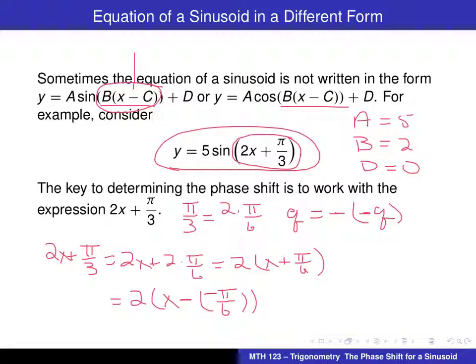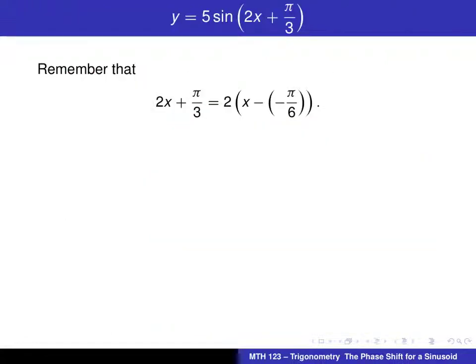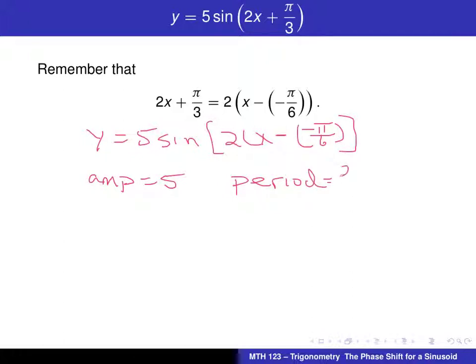And now we have this written in exactly the form b times x minus c. And this will allow us to determine the phase shift for this particular sinusoid. Alright, so what we have right now, then, is y equals 5 times sine of 2 times x minus, subtract, minus π over 6. And now we have exactly the right form, A times sine of b times x minus c. And we can see the amplitude is 5. The period is 2π over 2, or is equal to π.